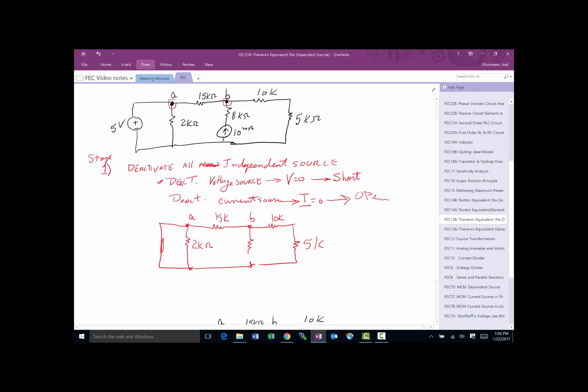So let's just make sure since I had to make that change. And here is where the current source was. Now, it's an open, which means the I that goes through here is what? Zero. So we have deactivated the current source. And you remember, this is where the voltage source was. And we put a short in there, which means we deactivate. So now, the voltage here is zero. That's the idea.